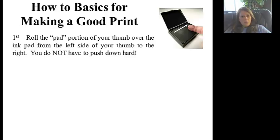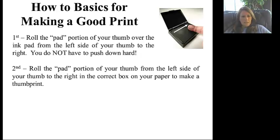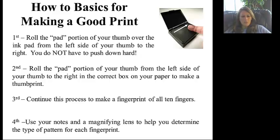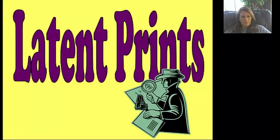First, we need to do a roll and it's always left to right. Usually you start with your thumb. You don't have to push down that hard — the ridges will pick up any ink you may have. Remember, if you just touch something, you leave your fingerprint behind. Then on the paper, do the same technique going left to right and continue with all prints. You'll use your notes and a magnifying glass so you can see the different ridge patterns to help identify the print.